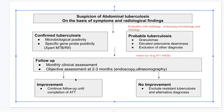Improvement means resolution of mucosal healing and resolution of ascites; continue follow-up until completion of ATT. With probable tuberculosis — presence of granulomas, elevated ADA in peritoneal tuberculosis, and exclusion of other diagnoses — initiate drug regimen. If there is no improvement, exclude resistant tuberculosis and alternate diagnosis.